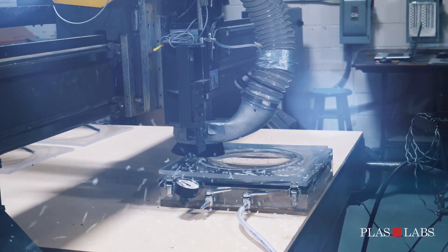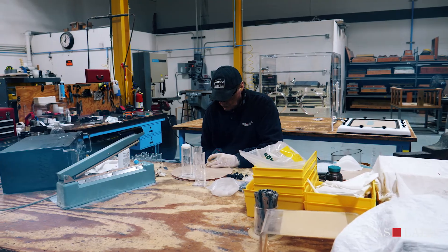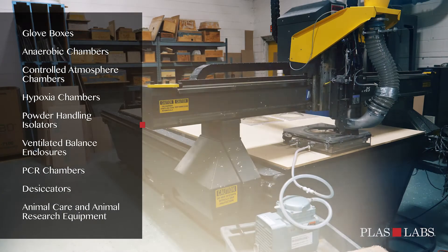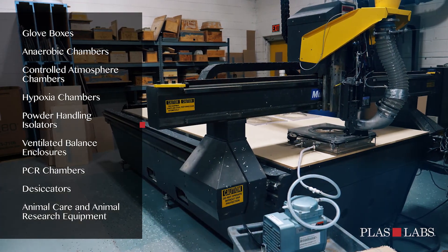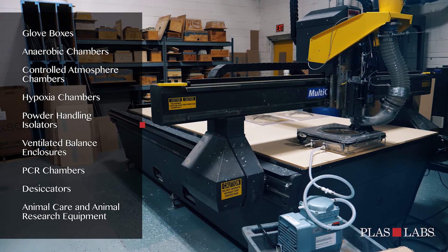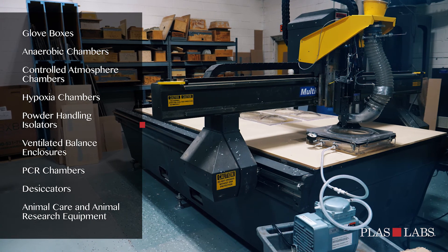We work closely with individual research scientists to design and manufacture custom, one-of-a-kind units for their specific research needs. PlasLabs research line includes glove boxes, anaerobic chambers, controlled atmosphere chambers, hypoxia chambers, powder handling isolators, ventilated balance enclosures, PCR chambers, desiccators, and animal care and animal research equipment.